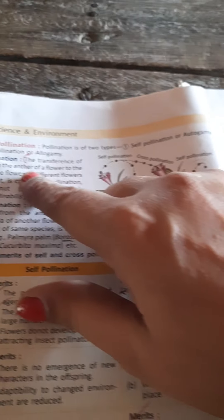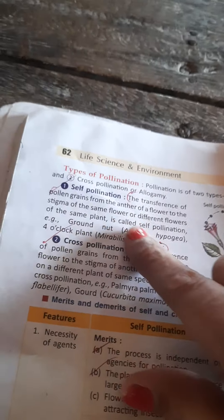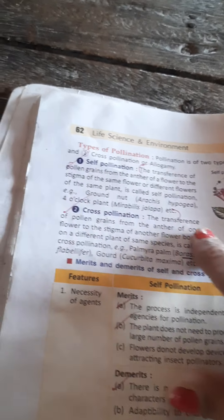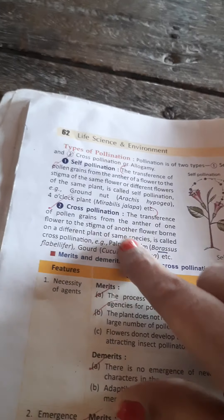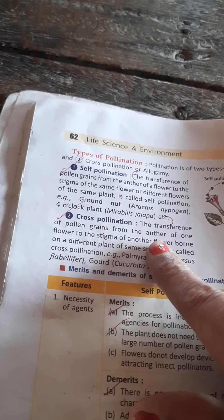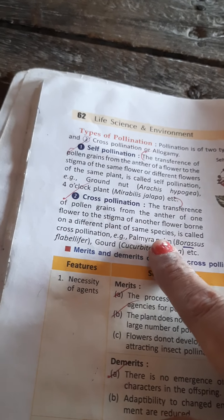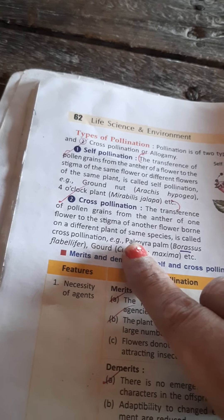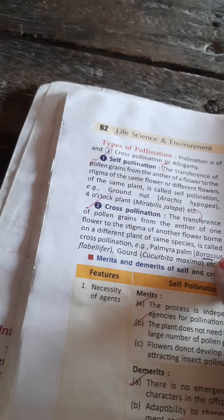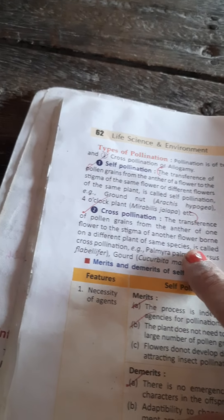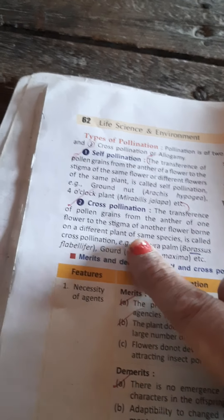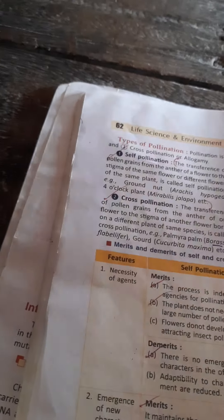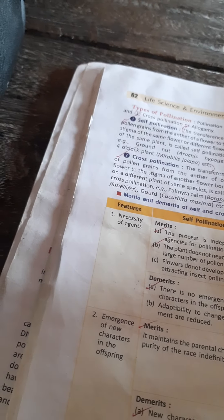Pollination has two types: self-pollination and cross-pollination. Self-pollination is the transference of pollen grains from the anther of a flower to the stigma of the same flower, or different flowers of the same plant — for example, groundnut and four o'clock. Cross-pollination is the transference of pollen grains from the anther of one flower to the stigma of another flower born on a different plant of the same species — for example, palmyra palm.